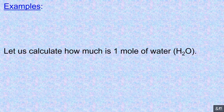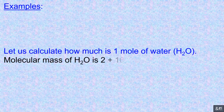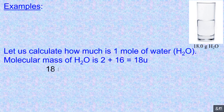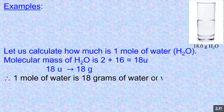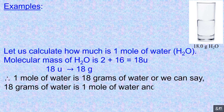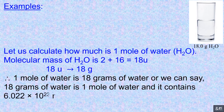Let us calculate how much is one mole of water, H₂O. Molecular mass of H₂O is 18 U. 18 U implies 18 grams. Therefore, one mole of water is 18 grams of water, or we can say 18 grams of water is one mole of water, and it contains 6.022 × 10²³ molecules of water.